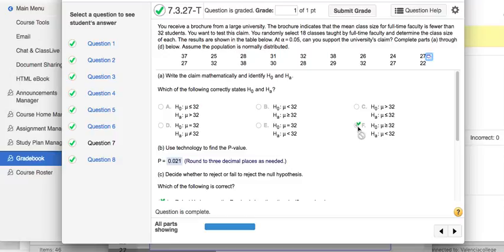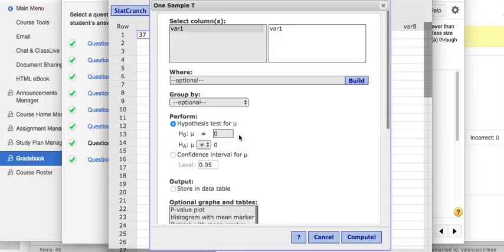So let me go back to my Hypothesis test here, to my StatCrunch, which is right here. And I'm going to choose the alternative to be the fewer than. And the null was greater than or equal to 32. So there's my Hypothesis test there.